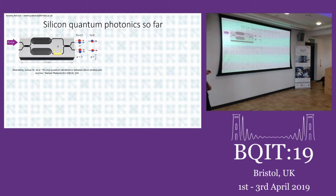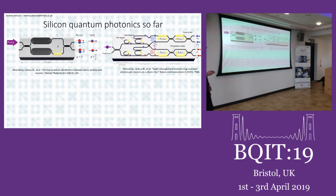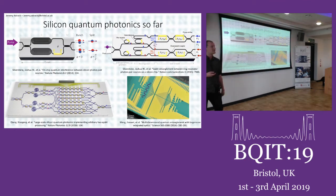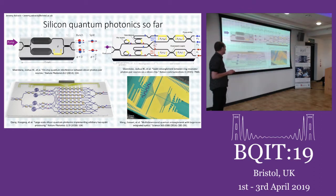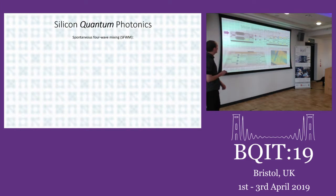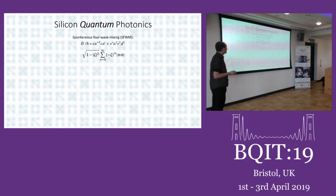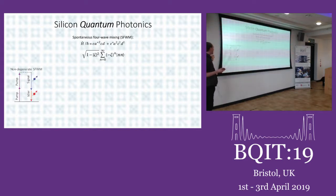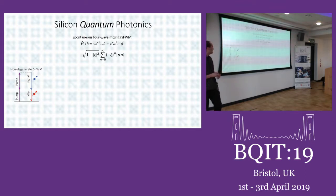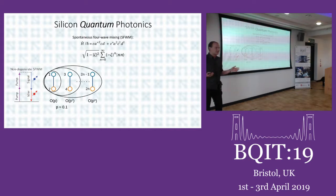Silicon quantum photonics has come a long way in the last five years since the first results from the group here at Bristol. We've gone from interfering two sources of photon pairs through to having two photons in huge numbers of nodes. But all of these experiments have in common — even though some have thousands of components — that they're all still two-photon experiments. To progress, we're going to have to change that and start having increasing numbers of photons on our platform. That's really the focus of this talk.